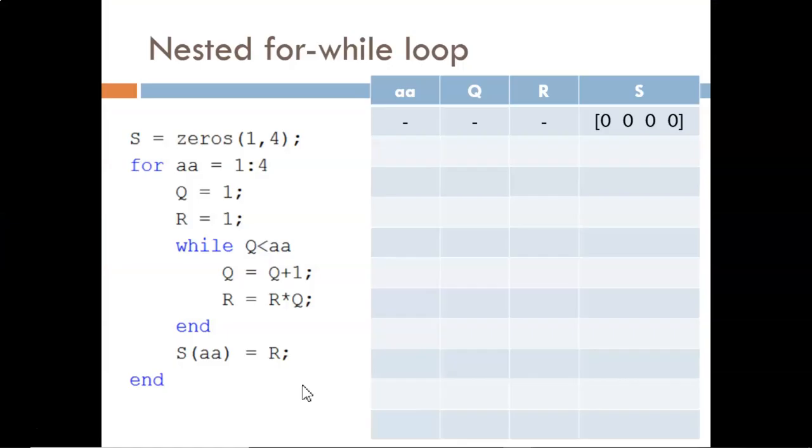Let's look at one last example, this one with a while loop inside a for loop. I have started the tracking table already. S begins as this vector of four zeros. Now, the for statement assigns AA to begin at 1.